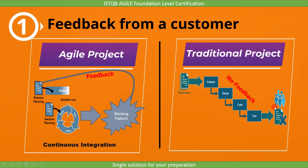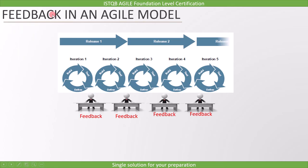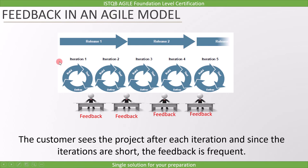That's why people had to look for another approach. Now let's see how we get feedback in an agile model. When agile development approaches are used, the customer sees the project after each iteration. And since the iterations are short, the feedback is frequent.